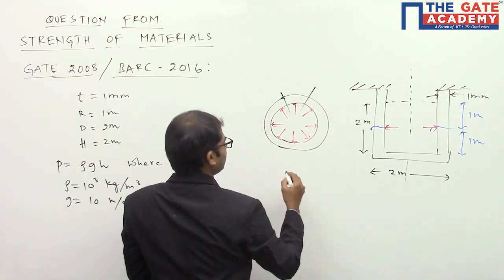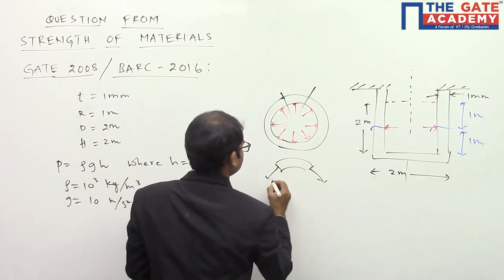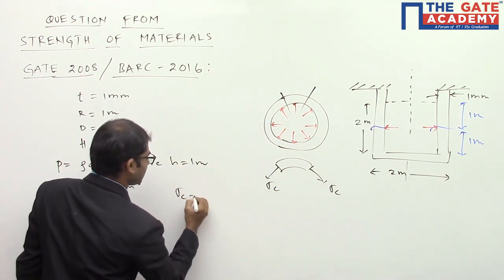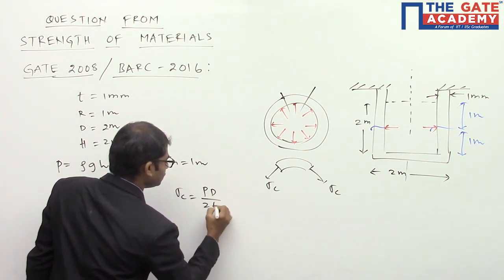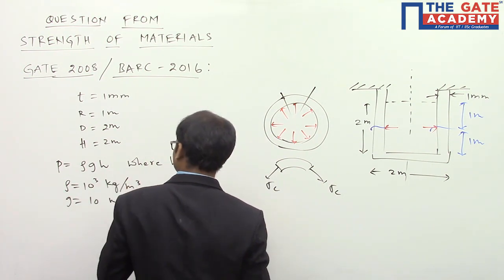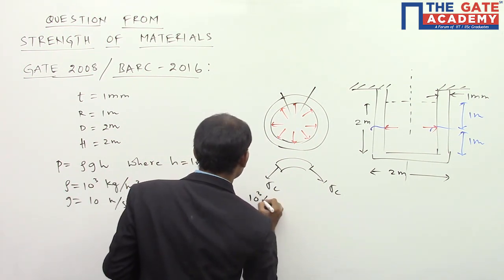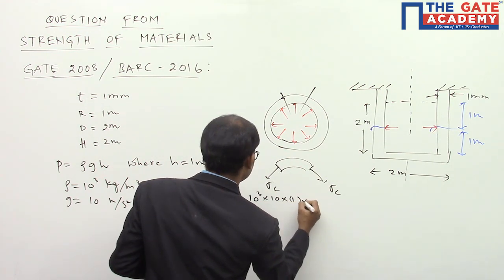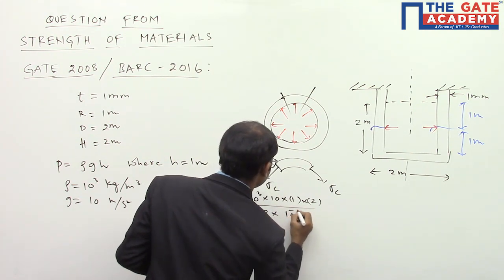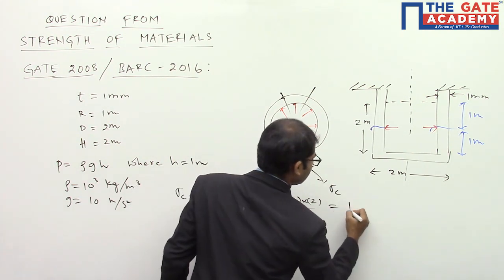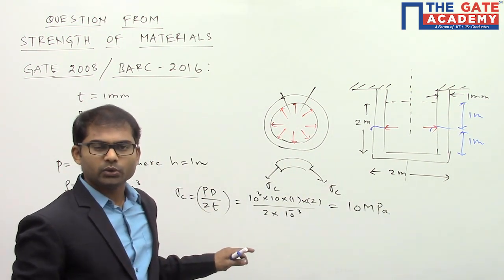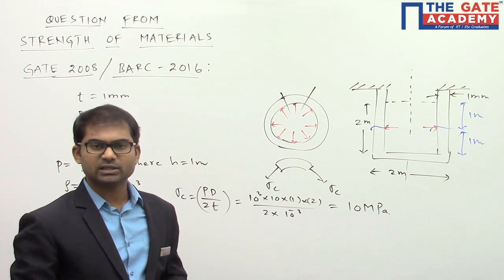Taking a small element, the circumferential stress is expressed using the formula σc = pd / (2t). Substituting the values: p = ρgh = 1000 × 10 × 1, diameter = 2, thickness = 1×10⁻³ m. This gives σc = 10 MPa. That is how you evaluate the circumferential stress at mid-height.